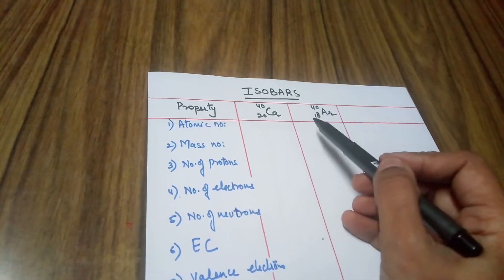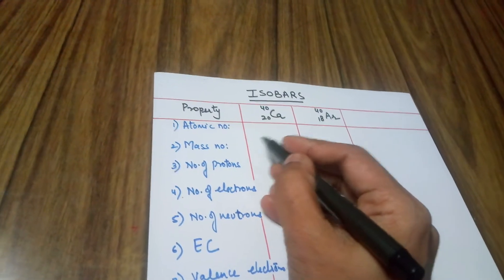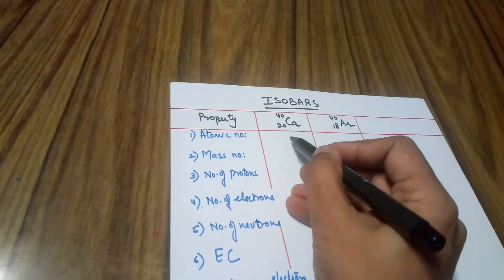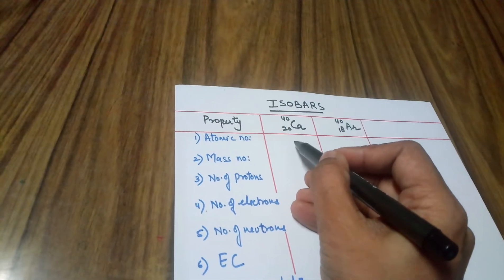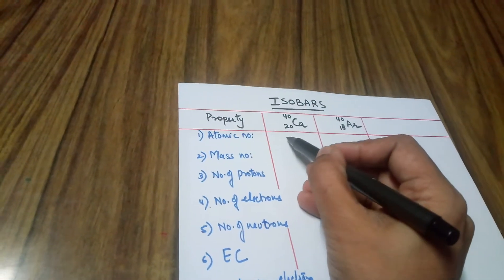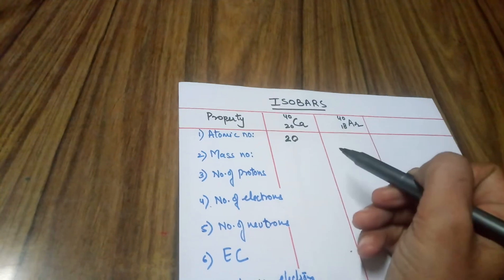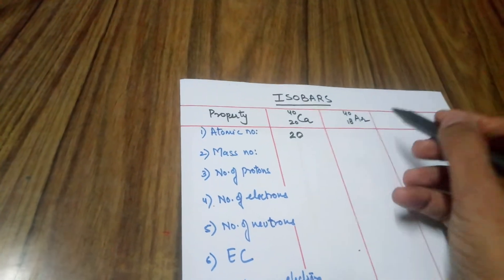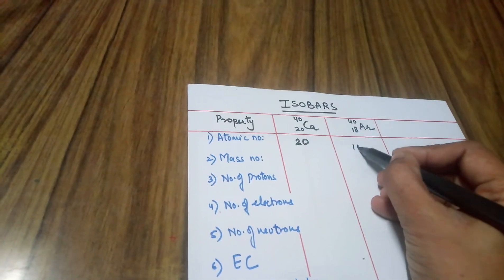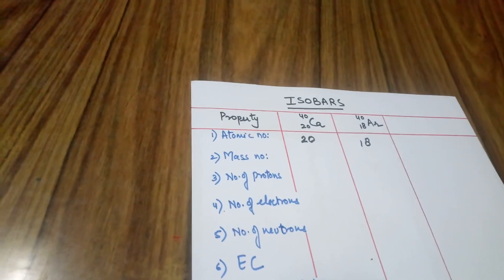Now let's compare these two identities one by one. Let's begin with the atomic number. The atomic number for calcium is 20. The atomic number for argon is 18. That is where they differ.